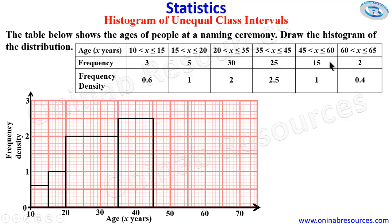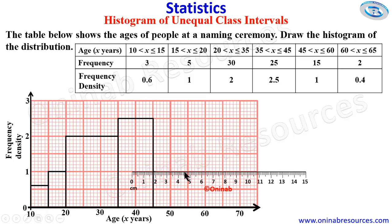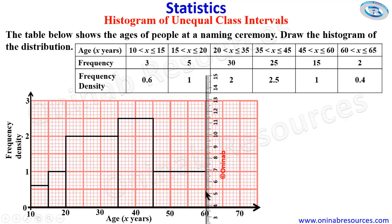The next interval is 45 to 60, with a width of 15. It spans from 45 to 60, and the height — which is the frequency density — is 1. We place our ruler and draw from 45 to 60, then join the height down to the horizontal axis. We are done with that interval.